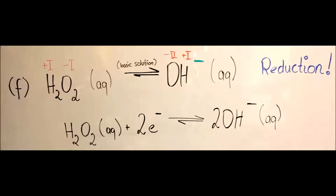At the end, the reaction of hydrogen peroxide with two electrons makes two hydroxide ions.